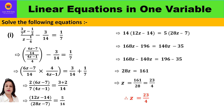Let us take the first question: (3/7)z minus (1/2) upon (z minus 1/4) minus 3/14 is equal to 1/7. Let us start solving it by taking LCM of 7 and 2, which is 14. 3 will be multiplied by 2 and 1 will be multiplied by 7, so we get 6z minus 7 upon 14.